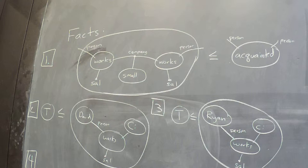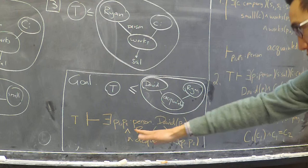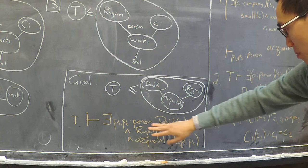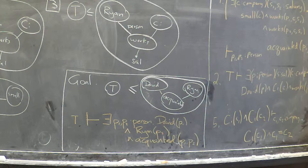Okay, and just in case you haven't had a chance to look at it closely yet, here's the goal theorem we want to prove: that it's true that David and Ryan are acquainted. Or in the text-based form, in the empty context it's true that there exists two people P1 and P2 where P1 is David, P2 is Ryan, and P1 and P2 are acquainted.